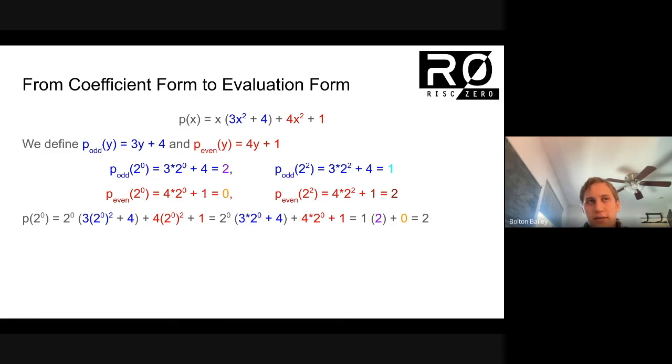How can we now evaluate p of x on an arbitrary value? We can take p of two to the zero. If we substitute two to the zero in, we get this expression. We see that we have two to the zero to the two, and that's really just two to the zero. So we can replace this two to the zero to the two by two to the zero. But now we see that the blue here is just this exact evaluation here. And similarly, this red evaluation is exactly this evaluation of p sub even on two to the zero. It turns out that just using this purple two and this orange zero, that's all the data that we need to evaluate p on two to the zero. And it turns out to be two.